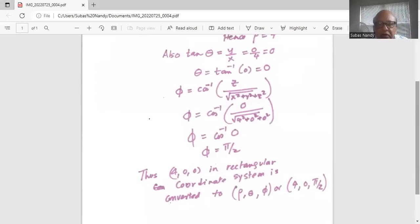Hence 4, 0, 0 in rectangular coordinate system is converted to 4, 0, and pi by 2 in spherical coordinate system.